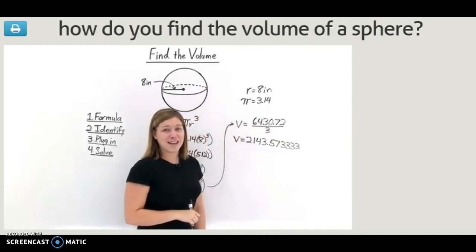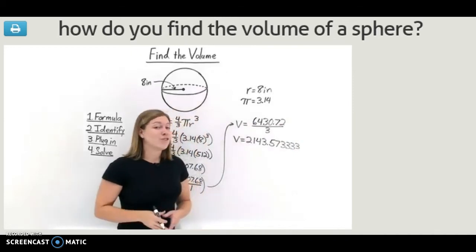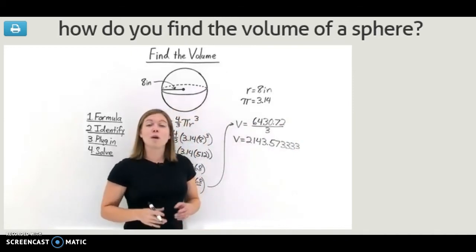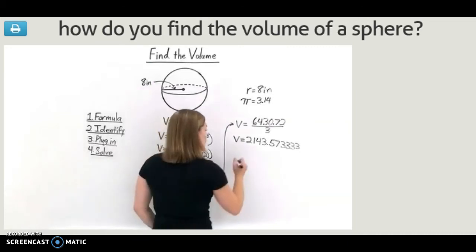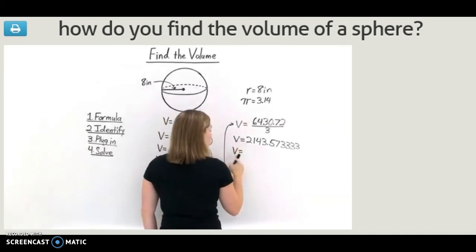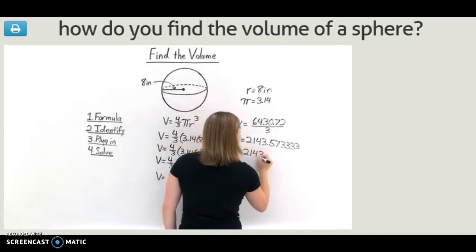That's not a very pretty answer. To make this answer look a little more presentable, let's round it to two decimal places. So when we round our answer, we get that the volume is equal to 2,143.57.